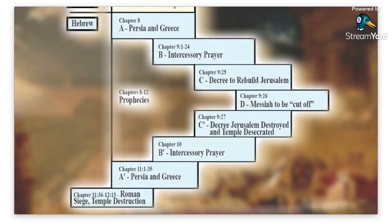In the second chiasm, chapter eight is about Persia and Greece (A), and chapter 11:1–35 is also A — also about Persia and Greece. Chapter 9:1–24 is intercessory prayer (B), and chapter 10 is also intercessory prayer. Chapter nine hinges on one verse: the first part is a decree for Jerusalem to be rebuilt (C), and chapter 9:27 is the decree for Jerusalem to be destroyed and the temple desecrated. And right in the middle of this chiasm is one verse where the Messiah is to be cut off — the hinge of Daniel and of all history: the cross, when Jesus was crucified for our sin.